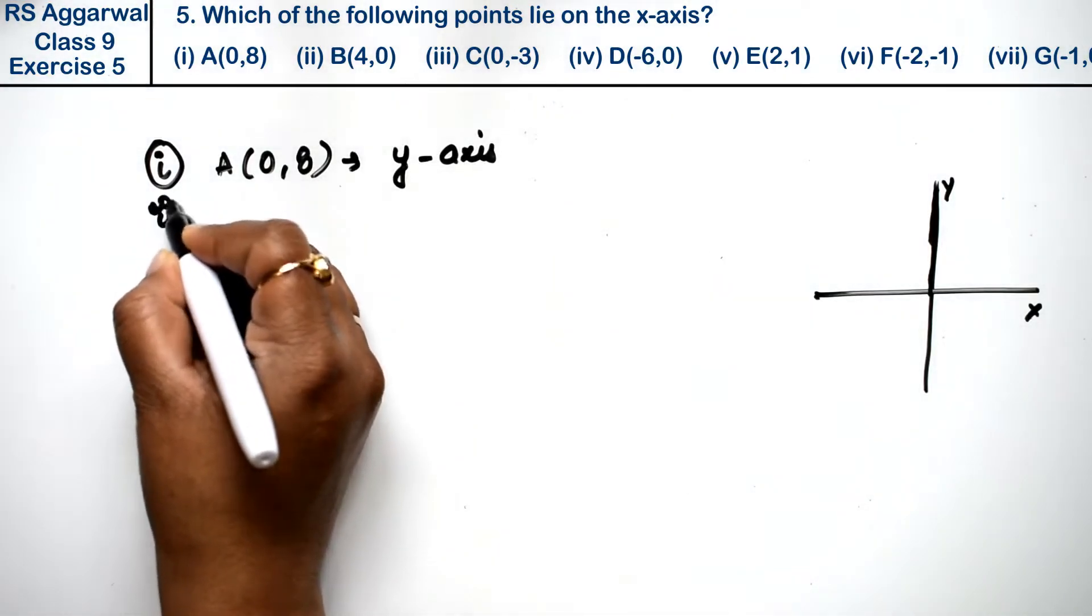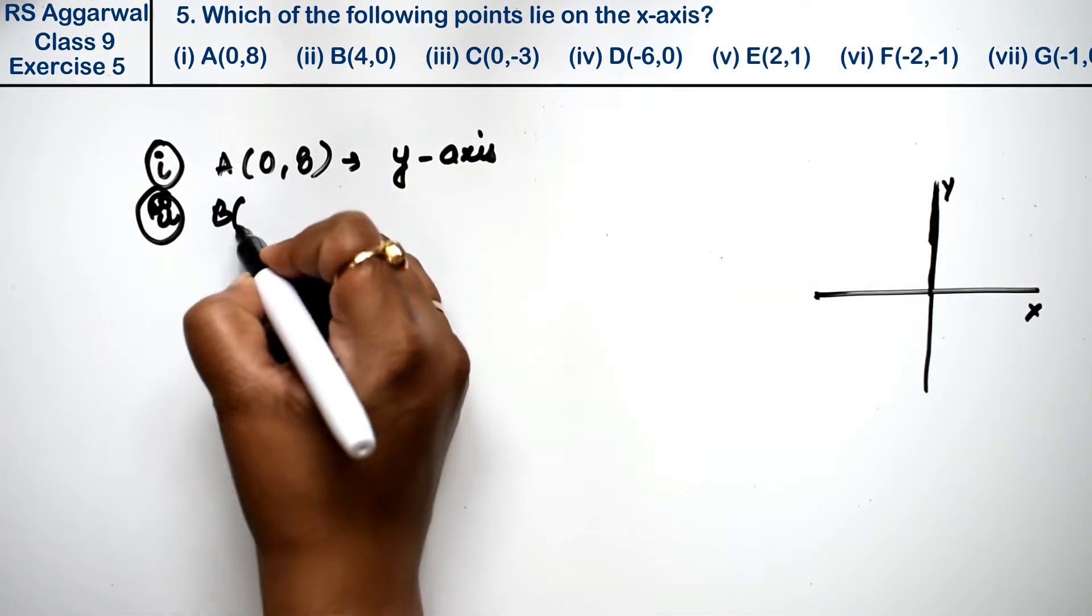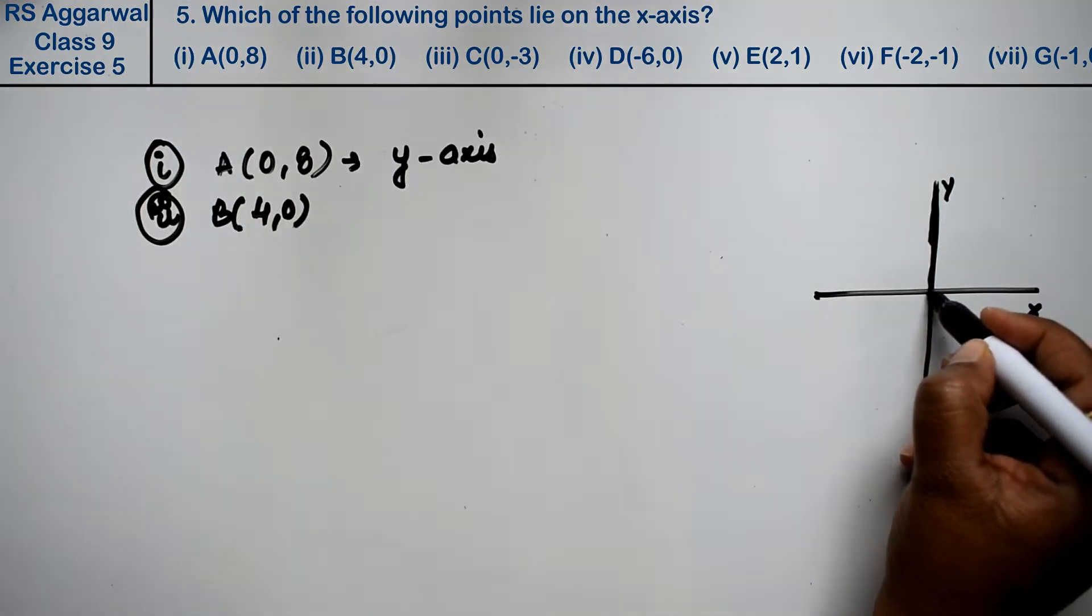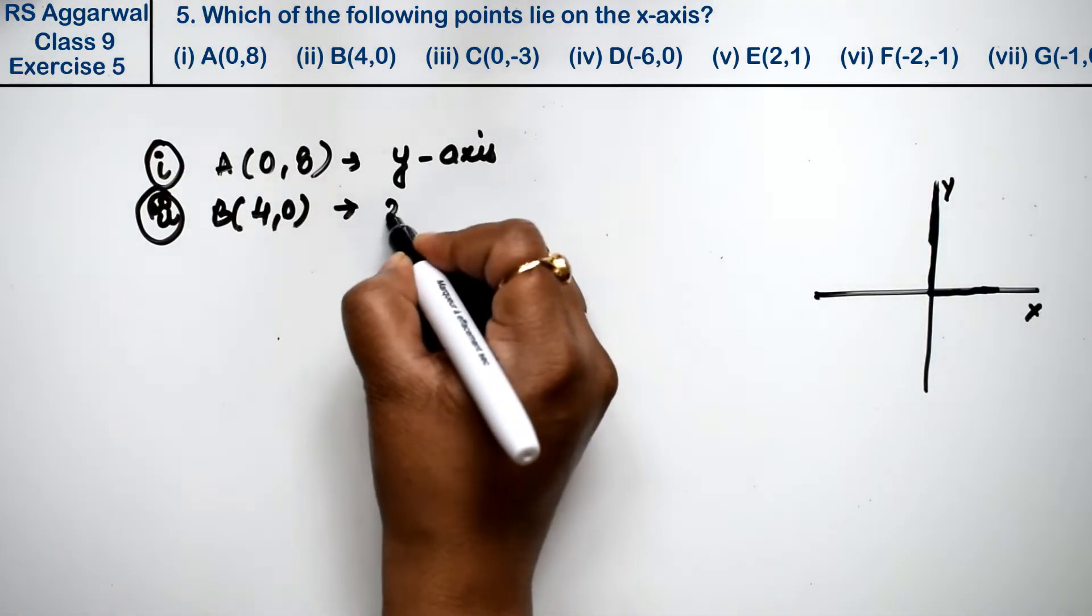Next point. Second point is B(4,0). x is 4 and y is 0. If x is 4, it will go on the x-axis because y is 0. So which axis? x-axis. Right, friends?